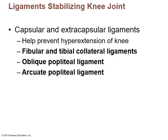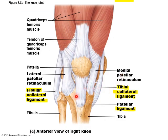There are ligaments that stabilize the knee joint — intracapsular and extracapsular ligaments that help prevent hyperextension. On the sides you have the fibular (lateral) and tibial (medial) collateral ligaments, which stabilize the medial and lateral aspects of the knee. In the back you have the oblique popliteal ligament and the arcuate popliteal ligament. Here's a look at the anterior aspect of the knee showing the patellar ligament, lateral and medial retinacula, and the collateral ligaments.